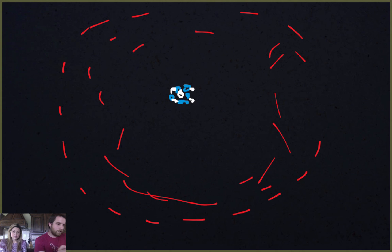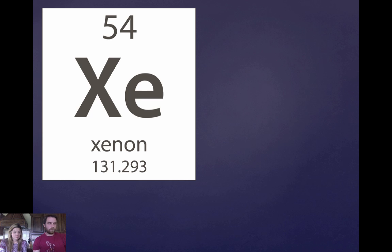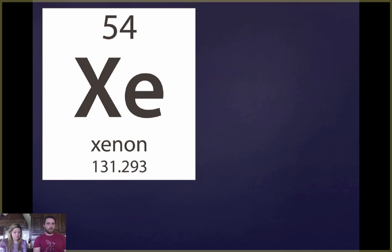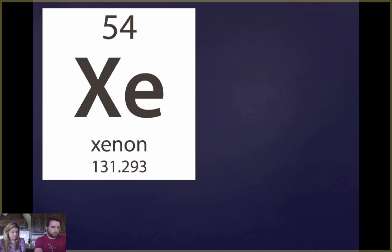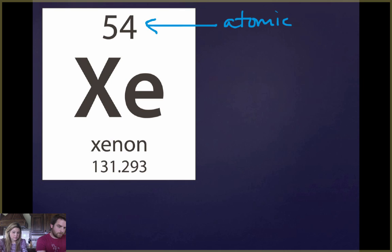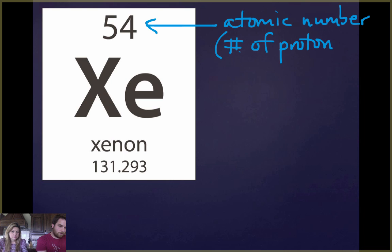Now let's talk about the periodic table and deciphering the information on it. If you find xenon, it's all the way over to the right in the last column. We see a couple of numbers — there's a 54, and we call that the atomic number. That always tells you the number of protons an atom will have. So xenon will always have 54 protons. Hydrogen has one, helium has two, xenon has 54.